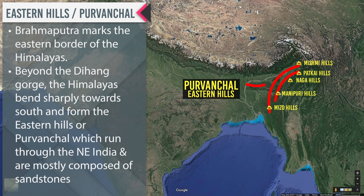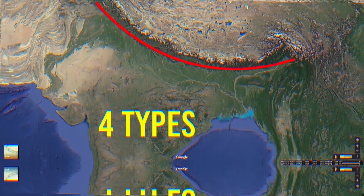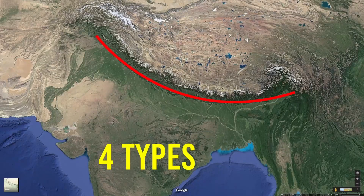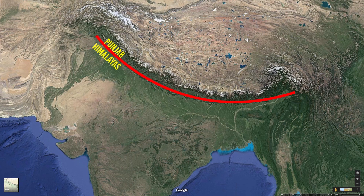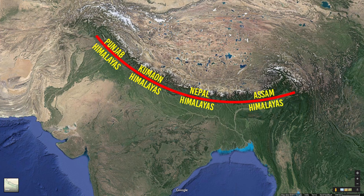The classification of the Himalayas on the basis of geographic location has four types. The first is the Punjab/Kashmir/Himachal Himalayas, located between the Indus and Sutlej rivers. The third is the Nepal Himalayas, between the Kali and Tista rivers. The last is the Assam Himalayas, between the Tista and Dihang rivers.